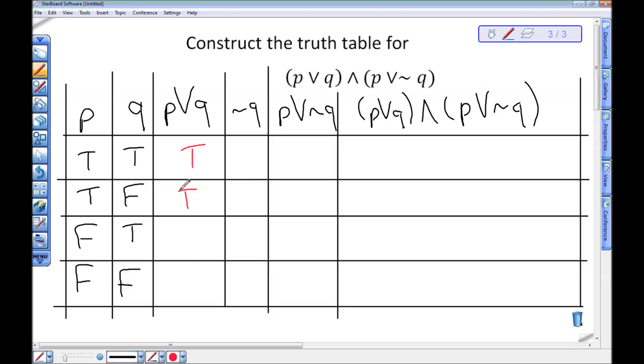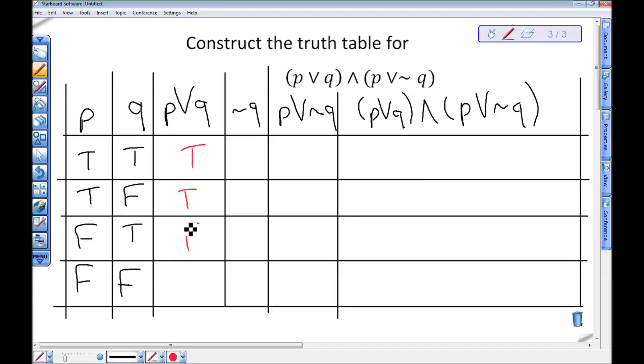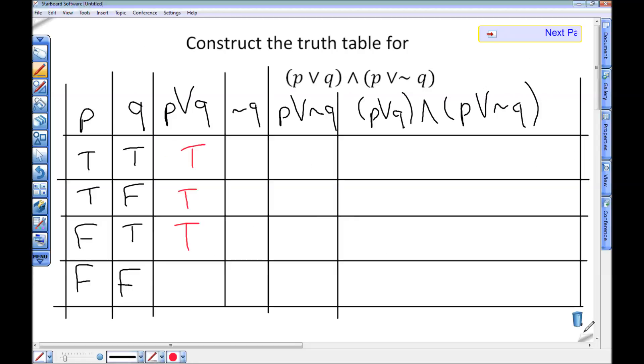Now I have false or true. Looking at my disjunction table, false or true is true. So I'm going to put a T right here. And in my last column, I have false or false. Looking at disjunction, false or false gives me false. So I'm going to put an F right here. Just referring to that table lets me see what I should put in this column.